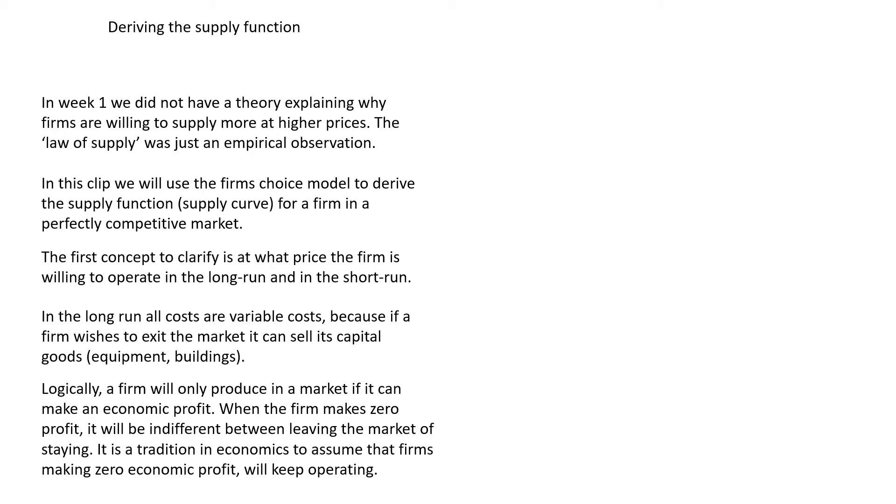Using these assumptions and this way of thinking, we can now start with a graphical derivation of the supply function in the long run. We use the standard graphic for the firm's choice problem, and we define a marginal cost curve, which is, for simplicity here, a line. But of course, it does not necessarily have to be a line. It could be any positively sloped monotonic function. We also have an average total cost.